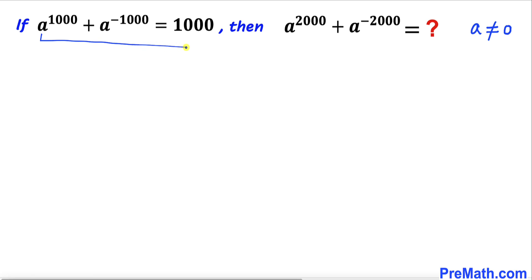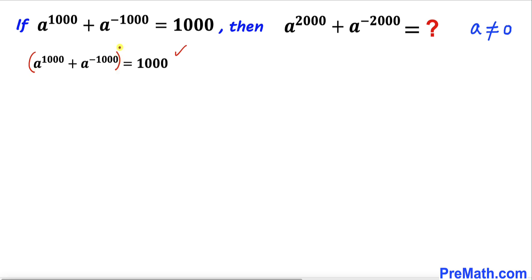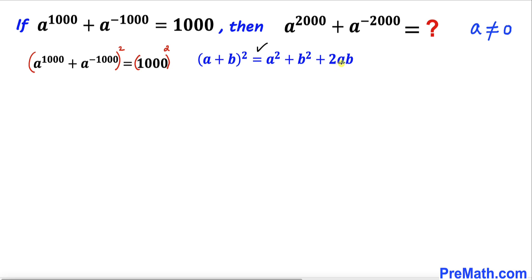Let's focus on this first equation. I have copied it down and we'll take a square on both sides — on the left hand side and on the right hand side as well. Now let's recall this famous identity: (a + b)² can be written as a² + b² + 2ab. We are going to apply this on the left hand side.